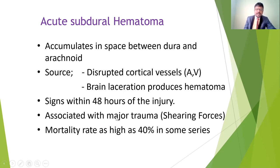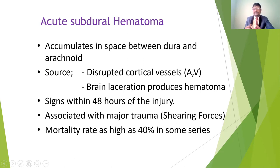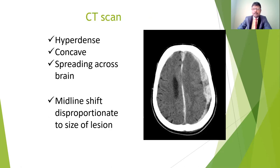Other factors associated with major trauma include shearing forces. In subdural hematoma, the mortality rate is as high as 40% in some series. If not resolved properly with treatment, up to 40% of people may die because of acute subdural hematoma. On CT scan, we can find the hyperdense subdural hematoma with a concave appearance, spreading across the brain, causing herniation and midline shift appropriate to the size of the lesion.